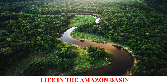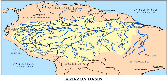Now, coming to the topic: Life in the Amazon Basin. In the given map, you can see that the tropical region lies very close to the equator. The river Amazon flows through the equatorial region. Notice how it flows from the mountains to the west and reaches the Atlantic Ocean in the east. The place where a river flows into another body of water is called the river mouth.